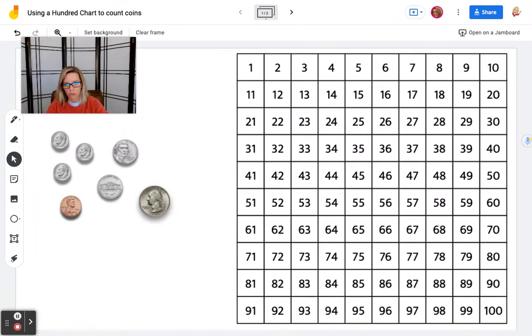Let's start with the largest coin first, which is our quarter. We know that a quarter is worth 25, so that's where we're going to start.